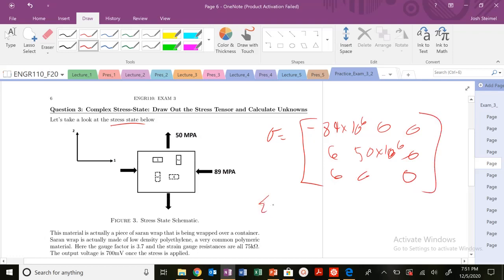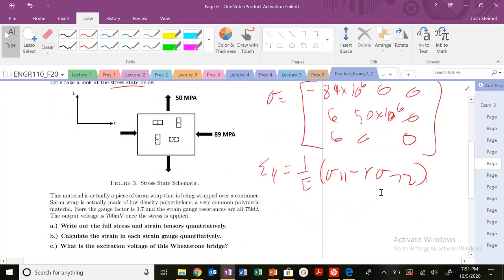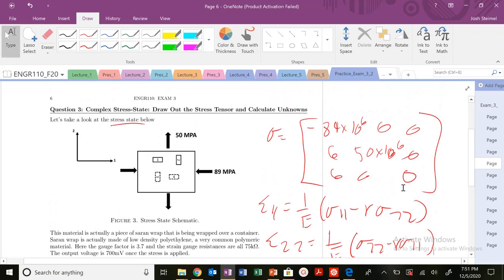So now I'm going to also have a strain in the 1-1 direction that is going to be equal to 1 over E, times sigma 1 minus nu, sigma 2-2. I'm already in the principal stress state as well. So 2-2 is also equal to stress in 2-2 minus nu times stress in the 1-1 direction.